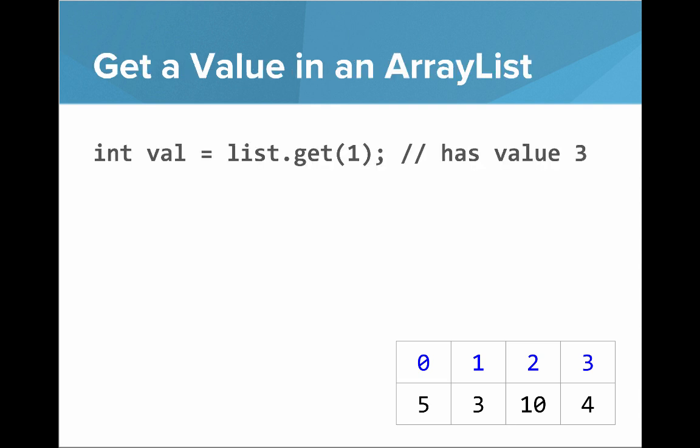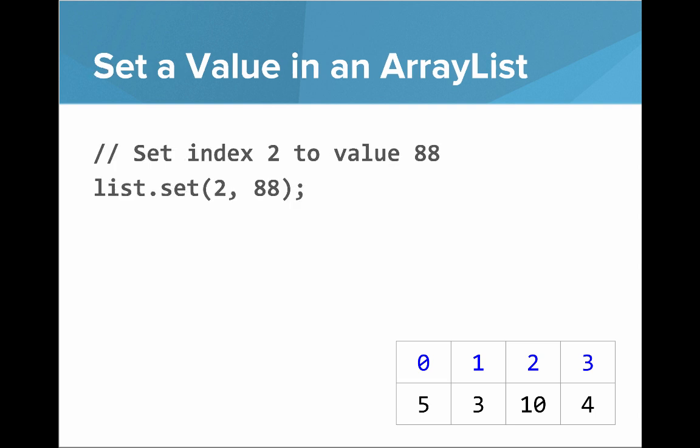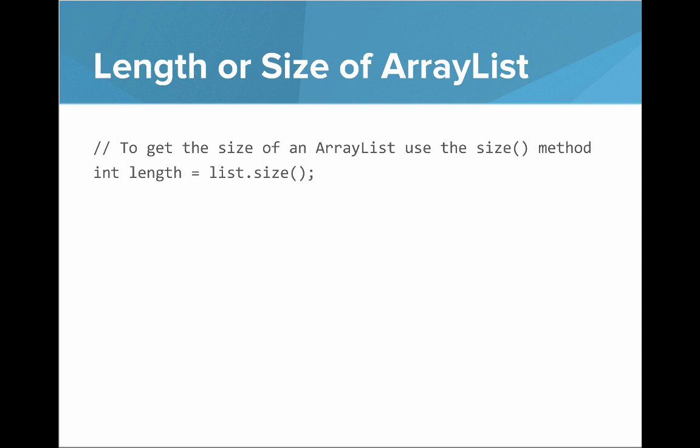If you'd like to get a value in an ArrayList, there's a get method which gets a value at that index. So if we say int val equals list.get(1), index one is value three. If you'd like to set a value, there's a set method where you can set at a specific index to a specific value — for example, list.set(2, 88). To get the size of an ArrayList you use list.size(). Note that size is the number of elements in the ArrayList, which is different from array length — an array has a fixed length, whereas ArrayList size reflects how many elements it actually has.